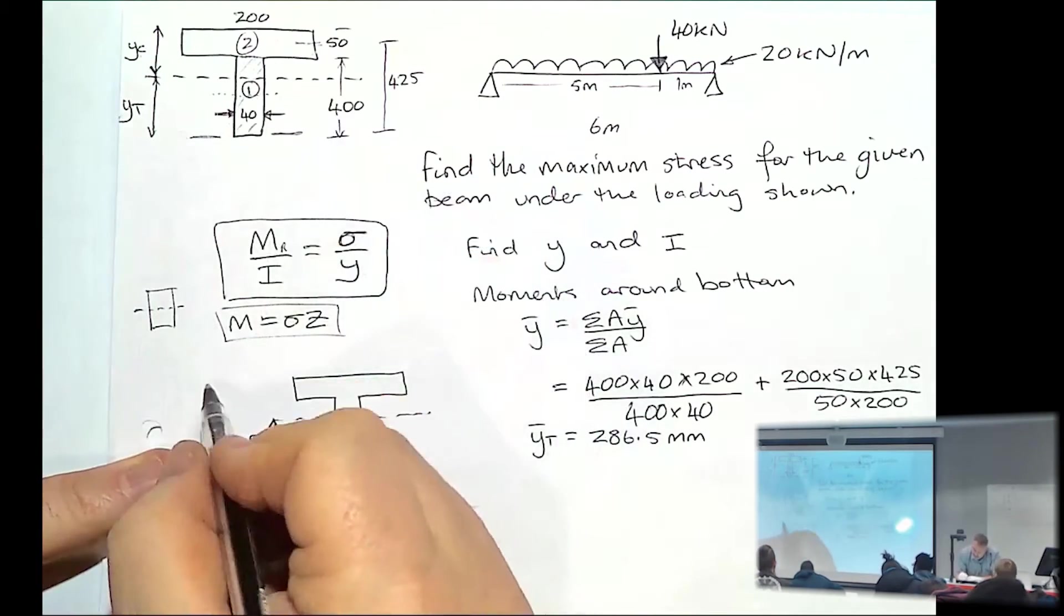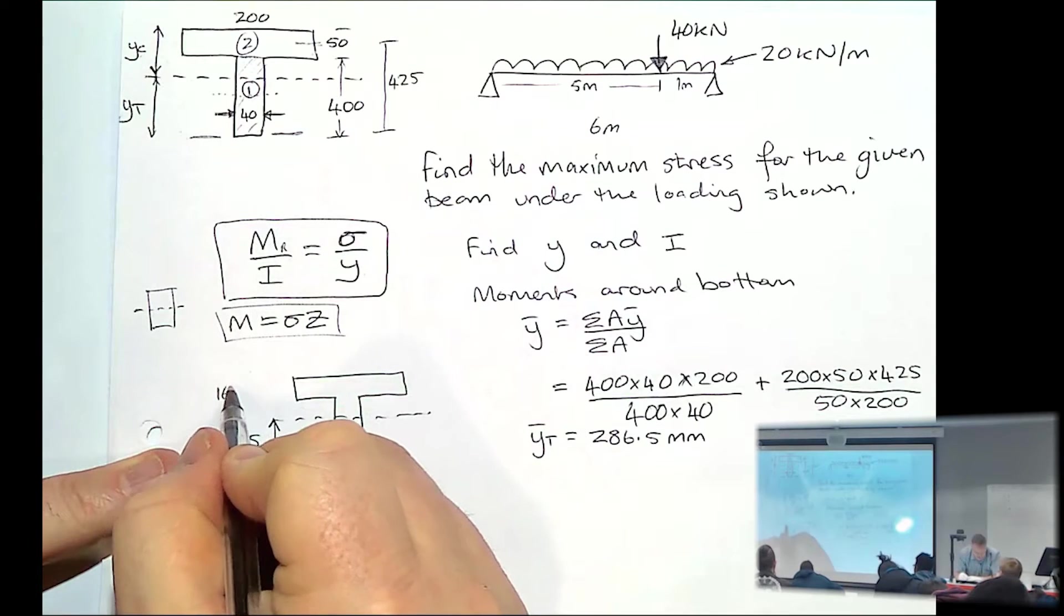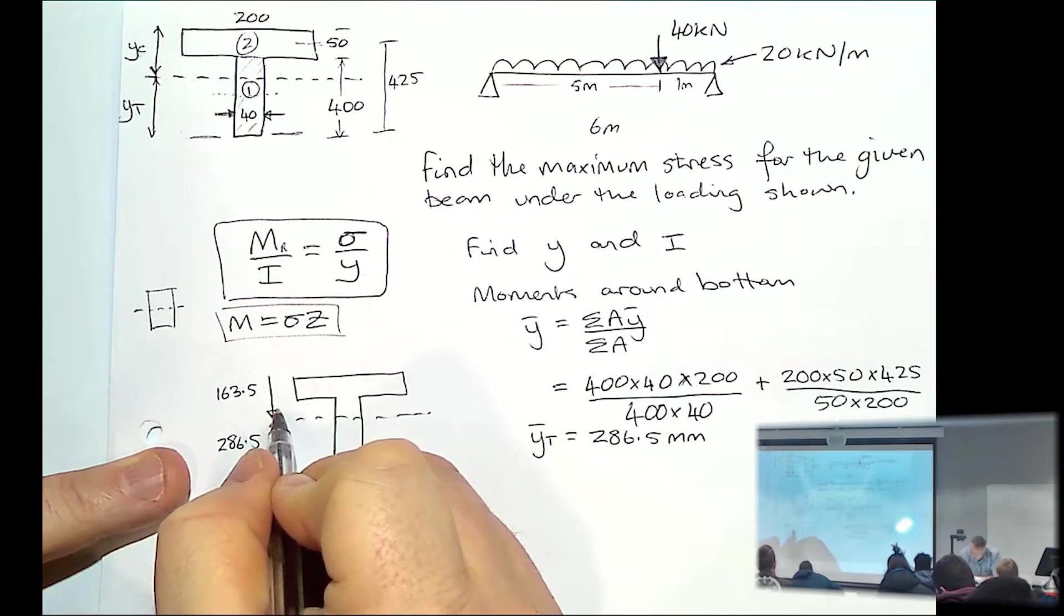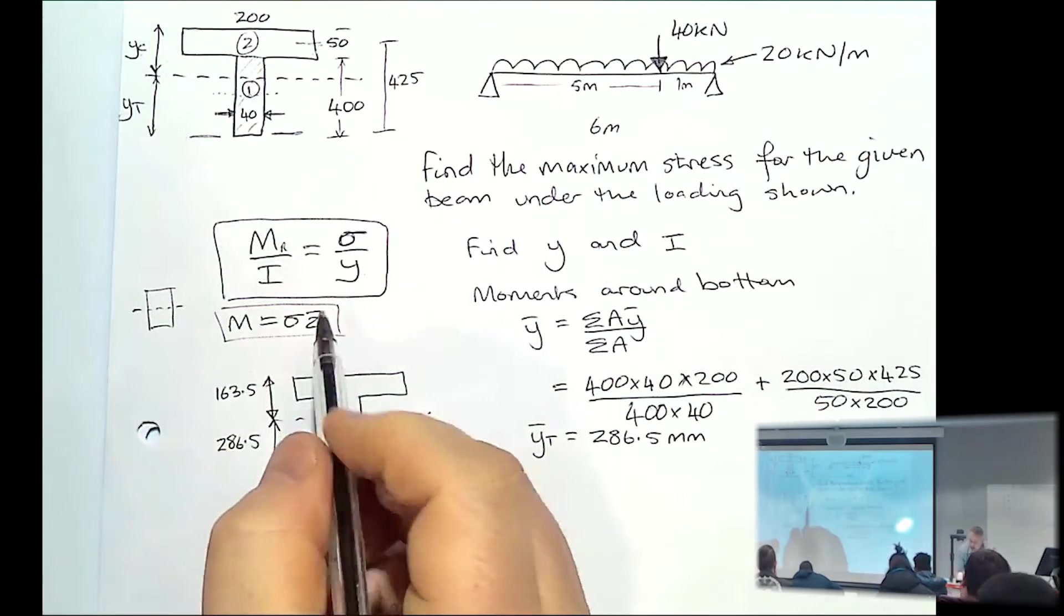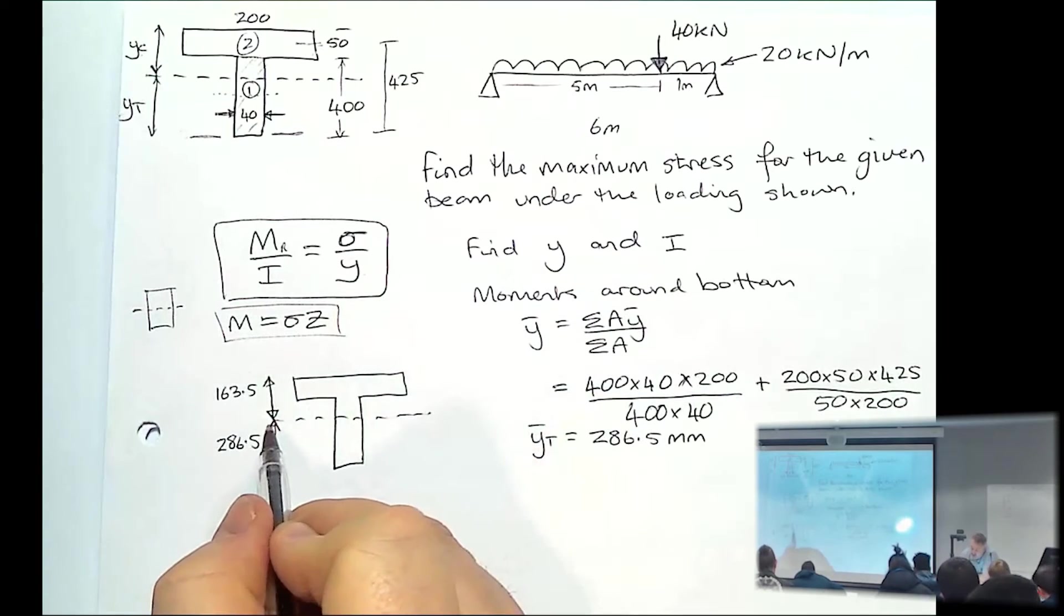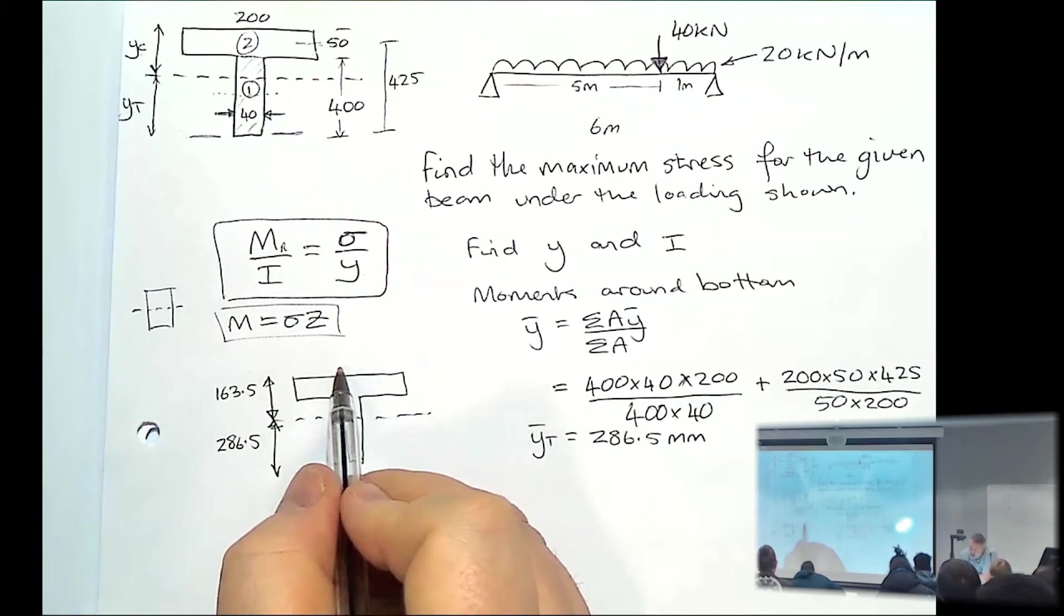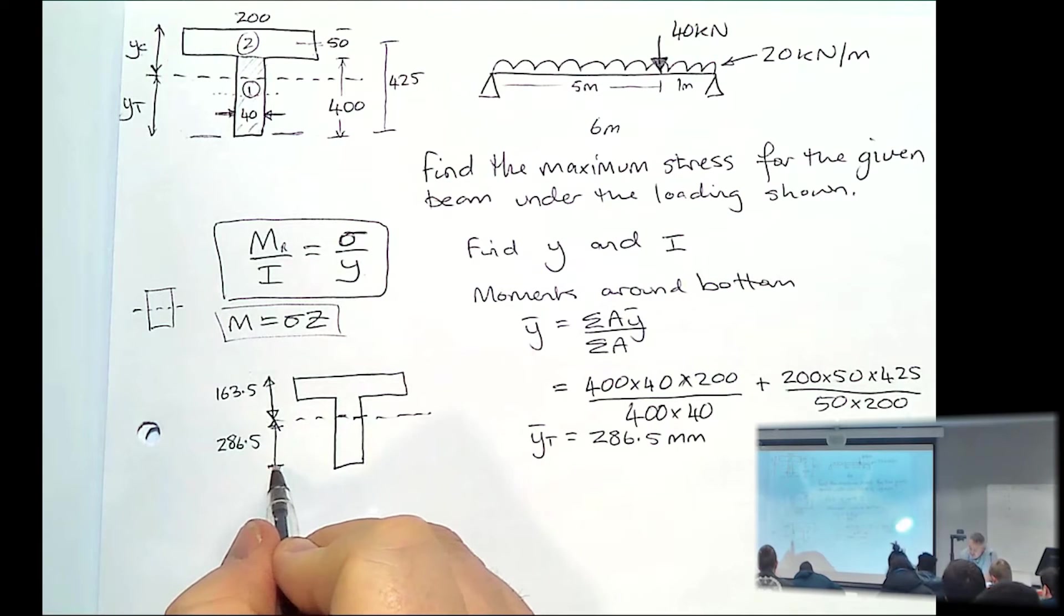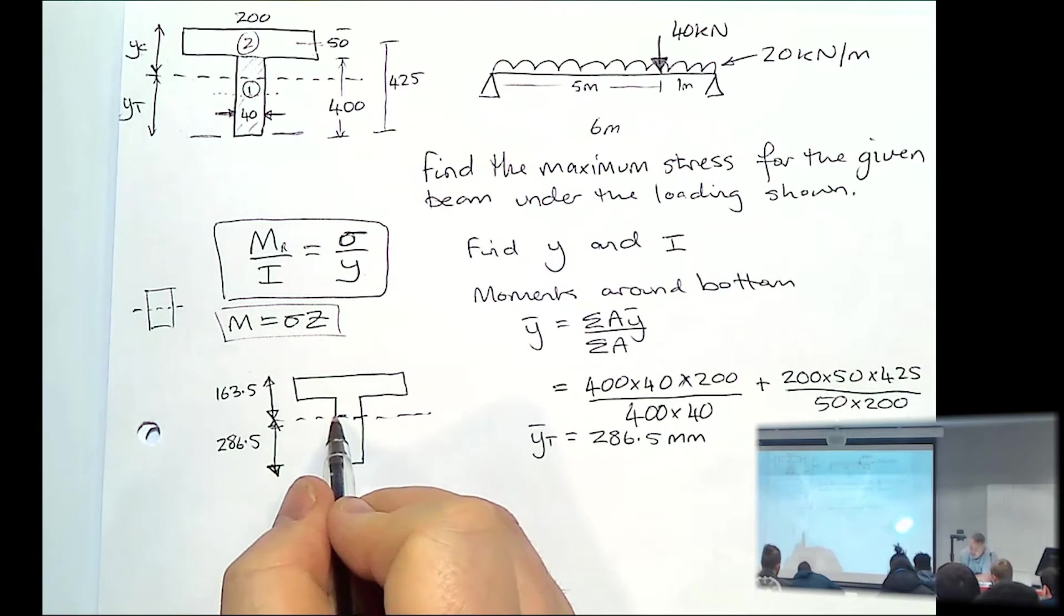If you take away 450, we get 163.5, that's the distance from the neutral axis to the top. So again, when you're working for something like this, trying to work out the maximum stress, when the load has been applied at the top, the stress will be greater, the further away you move from the neutral axis. And the furthest point away is 286.5.